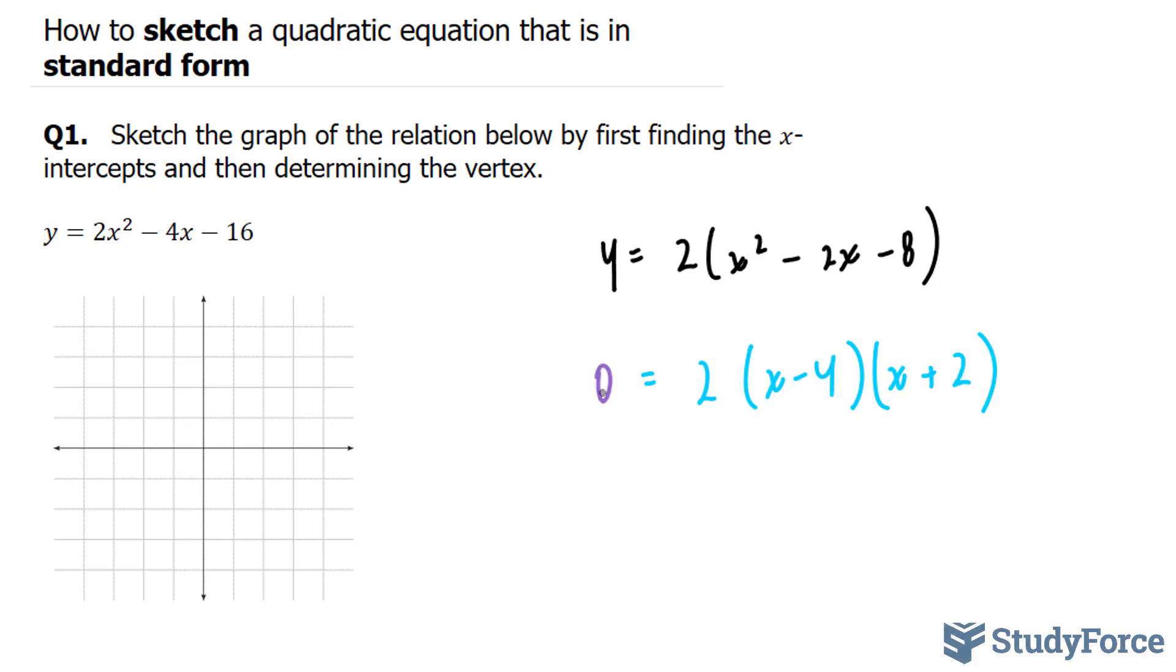If I set that equal to 0, I end up with two possibilities: x - 4 = 0 and x + 2 = 0. Solving for x here gives me x = 4 and x = -2. That is my first root.